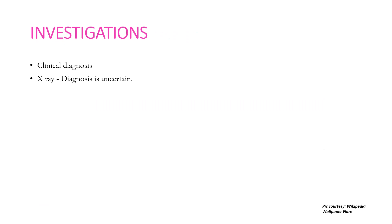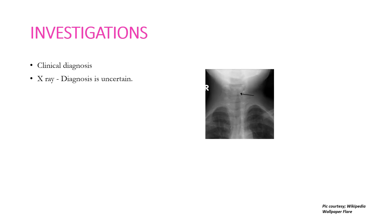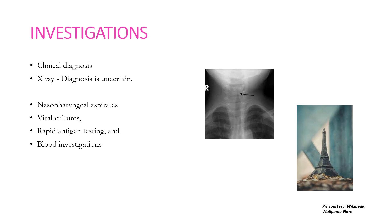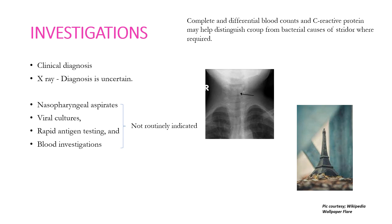Croup is essentially a clinical diagnosis and investigations are rarely of value. X-ray may be warranted if the diagnosis is uncertain; a classical steeple sign due to glottic and subglottic narrowing may be seen, though its sensitivity and specificity are not very good. Nasopharyngeal aspirates, viral cultures, rapid antigen testing, and blood investigations are not routinely recommended. Complete blood count and C-reactive protein may help distinguish from bacterial causes of stridor like bacterial tracheitis where required.